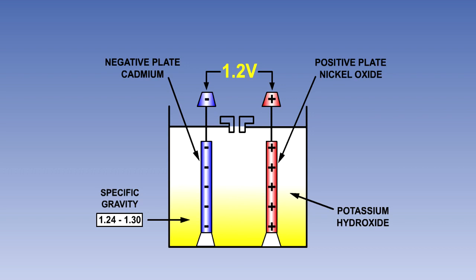The on-load voltage of one cell is approximately 1.2 volts.